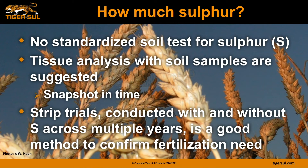Another way to analyze sulfur needs on your farm is to conduct strip trials. Choose a field and split it — apply part of that field with Tiger XP, leave the other side untreated with sulfur, and harvest those separately to compare yield differences. We suggest doing this in multiple fields, or at least in the same field over multiple years, to confirm specific sulfur needs on a field-by-field basis.